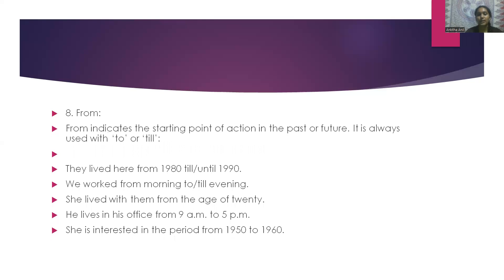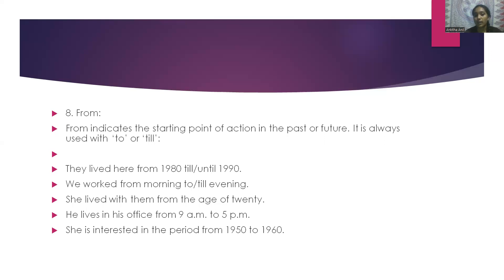The next word is 'from'. From indicates the starting point of action in the past or future. It is always used with 'to' or 'till'. For example: they lived here from 1980 till 1990, or from 1980 until 1990. We worked from morning to evening, or from morning till evening.